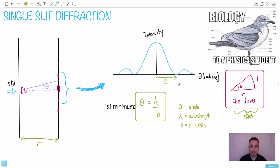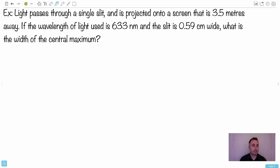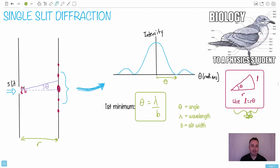That's how we can project this to a real distance. So let's do a real example. We have light passing through a single slit. It's projected onto a screen that is 3.5 meters away. So that means we have this distance right here is 3.5 meters. Now the wavelength of light used is 633 nanometers. That's lambda, 633 nanometers means times 10 to the minus 9 meters.